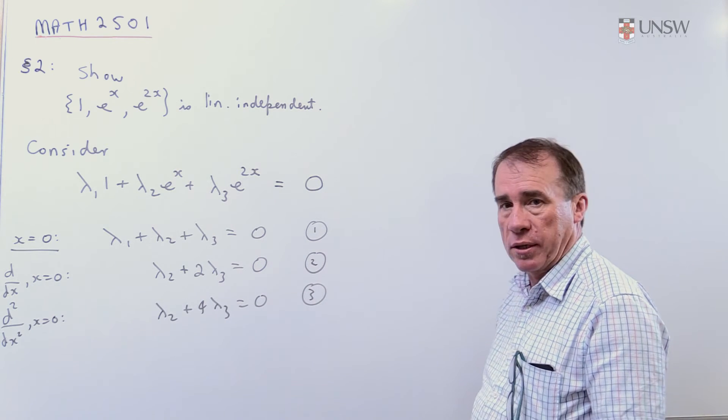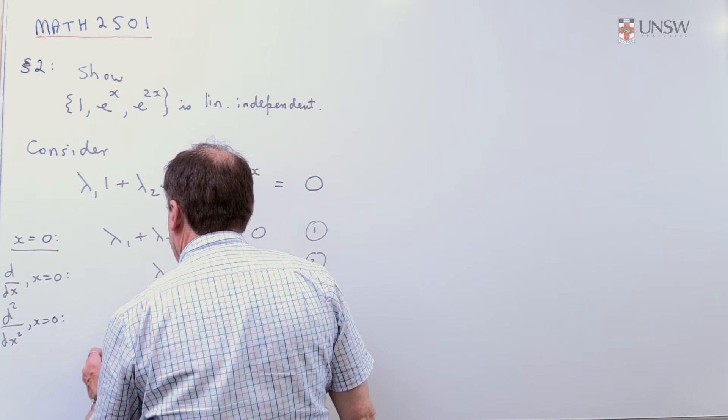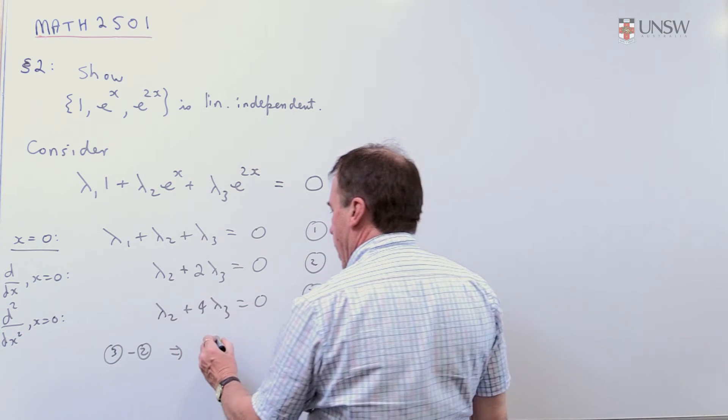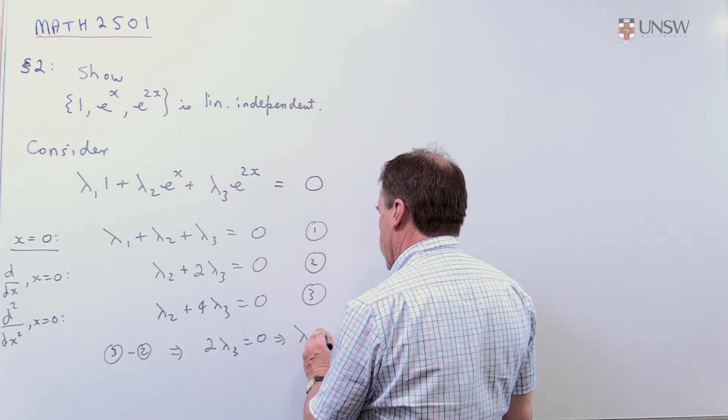Well, now you should see that we're pretty well close to finished, because if I now subtract equation 3 minus equation 2, and the lambda_2's cancel, so I'll get 2*lambda_3 is zero. So that wipes out lambda_3.